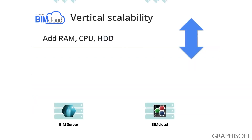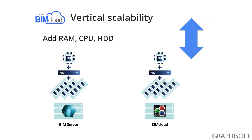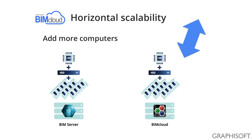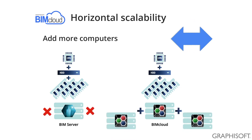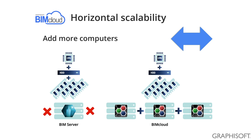From a performance point of view, BIMserver allows users to scale their resources vertically, while BIMcloud allows them to scale their resources horizontally as well. Vertical scaling means adding CPU power and RAM to a simple computer. Horizontal scalability means that multiple computers can be put next to each other acting as one BIMcloud for the user. BIMserver does not allow horizontal scalability.